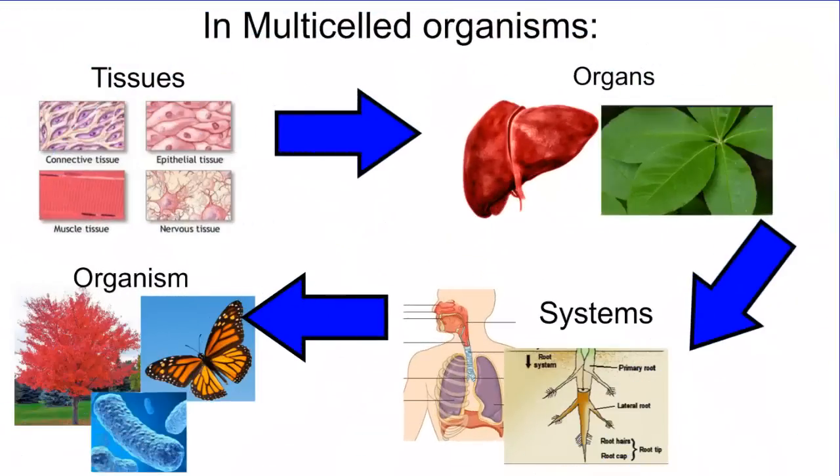Ultimately the next level is going to be called organism, which is the bottom left hand side of the screen here. The organism called the autumn blaze maple or the monarch or the bacteria. But the bacteria, because it's a single cell, that's the only makeup of that organism.